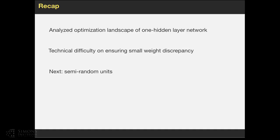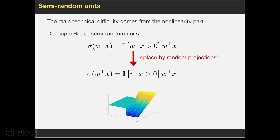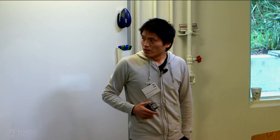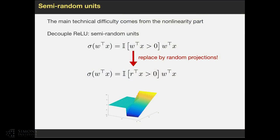Next we describe the semi-random units to address this issue. As we discussed before, the difficulty comes from the non-linearity part. You can think about a ReLU function as two parts, where it has a non-linear part and a linear part. For semi-random units, we replace the W in the non-linear part by random projection by R. That is, the non-linearity only depends on random parameter, and we don't optimize that, but we only optimize a linear function. In this case, the D matrix will only consist of functions of R's but not W. So it will not change during the process of optimization.